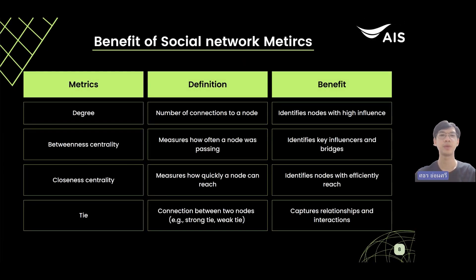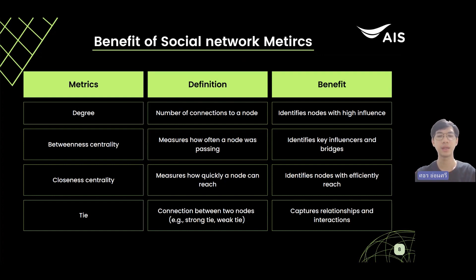Benefits of social network metrics: utilizing social network metrics like degree, betweenness centrality, and closeness centrality helps filter out noise, identifies influencers, and optimizes strategies for effective marketing and network development.